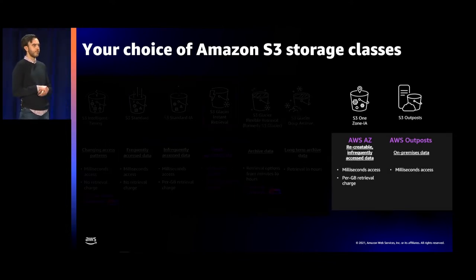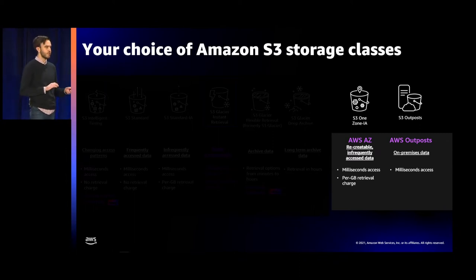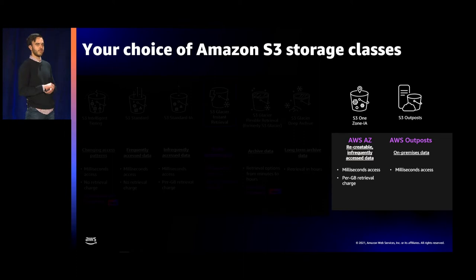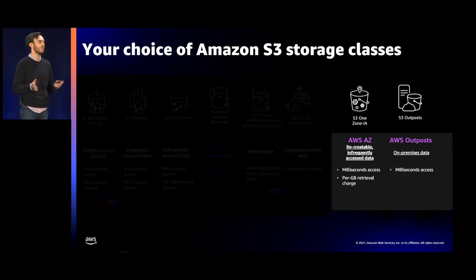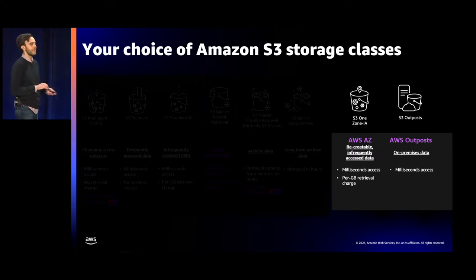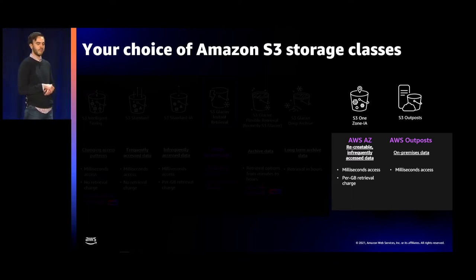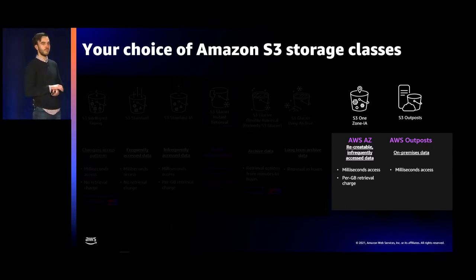Additionally, S3 offers storage classes for specialized workloads. For easily recreatable data or for storing a secondary copy in a different region, you can use the S3 One Zone Infrequent Access storage class, which delivers additional cost savings over S3 Standard Infrequent Access but stores data in a single availability zone. And S3 on Outposts delivers object storage to your on-premises environment with the S3 API and the AWS capabilities you use today.